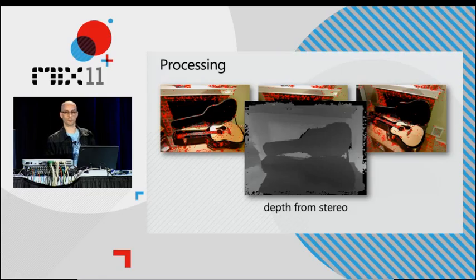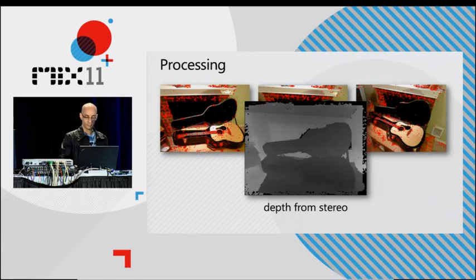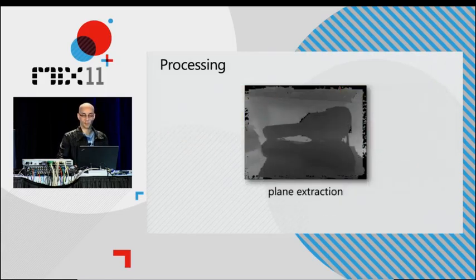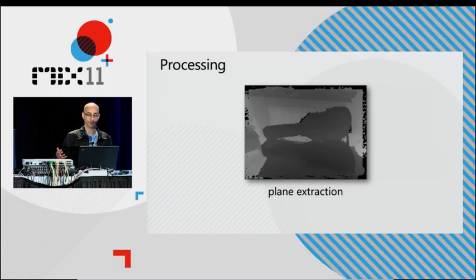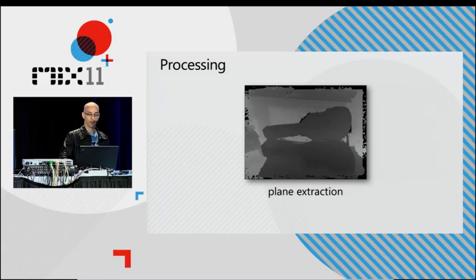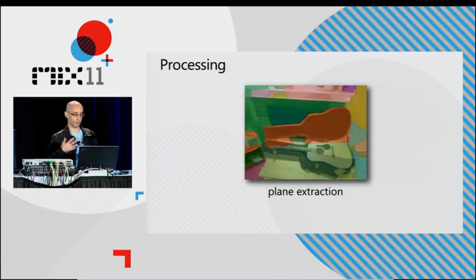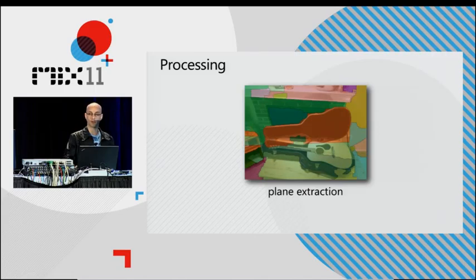Once we have that depth information, the final step is to approximate it using planes, and that gives us a smaller representation that we can send back to the client to render things. We find places where the depths are similar and aligned with a plane and separate those out — here we've colored different planes using different colors. Once we have the smoothed-out camera path and this approximated depth with planes, we can send that back to the client for rendering.